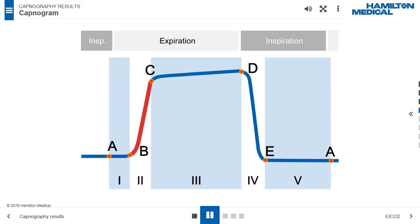Phase 2, B to C, the CO2 value rises rapidly because the gas from the anatomical dead space is replaced by CO2 rich alveolar gas.